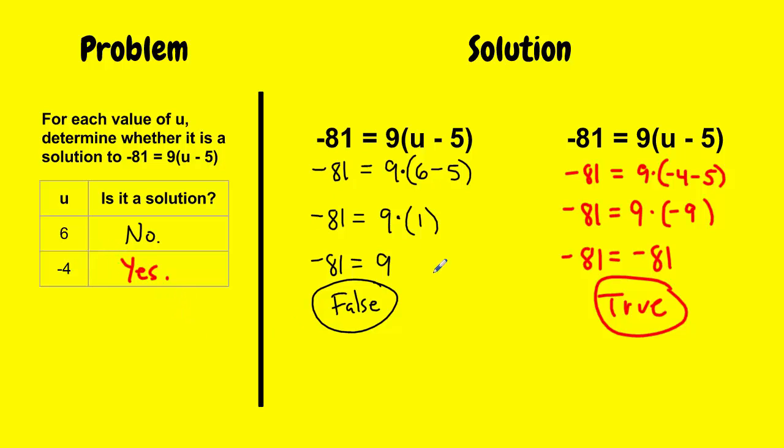And this applies to any equation you're working with in algebra. So if you want to check if it's a solution, you just have to substitute it, simplify everything. And if you get the same number on both sides like we did here, we know it's a solution. If you get different numbers on each side, that's a false statement and we know it's not a solution.